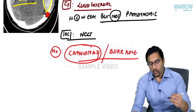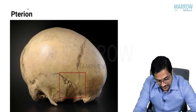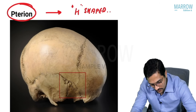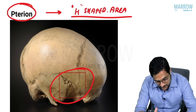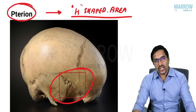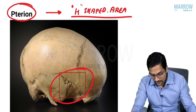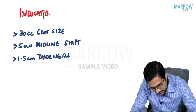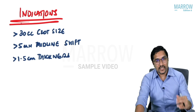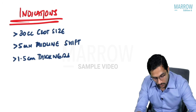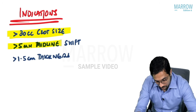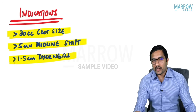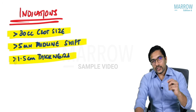The burr hole or craniotomy is usually done close to the pterion — an H-shaped area where various cranial sutures meet. This is the most common site where EDH occurs. The indications for craniotomy, updated from the latest Bailey and ATLS manual, are: clot size more than 30 cc, midline shift more than 5 mm, or clot thickness more than 1.5 cm.